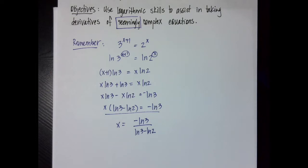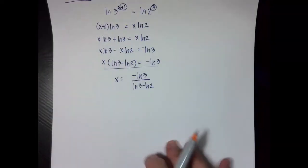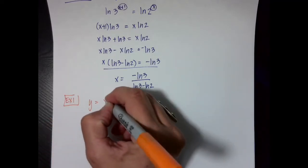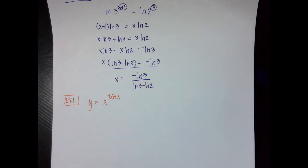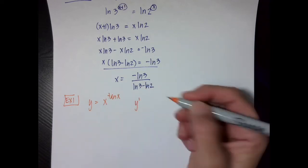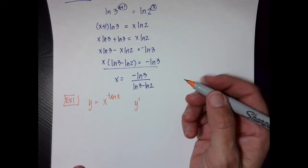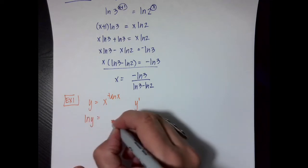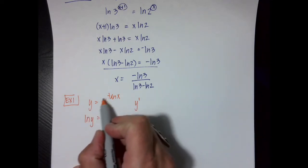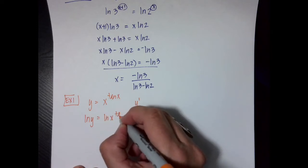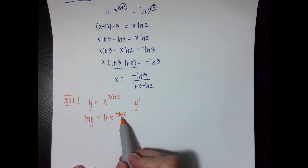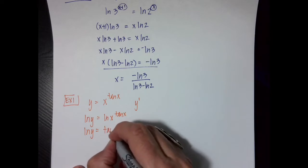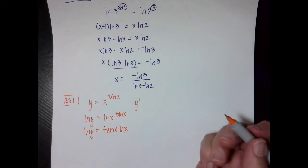Let's do our first example. I'm going to have y equals x raised to the tangent of x, and I want to find the derivative. I'm going to tell you that would be a little bit entertaining. But what I'm going to do — just like before — is take the natural log of both sides. Since the exponent goes out front, I'm going to take the natural log of y and write the tangent of x times the natural log of x.